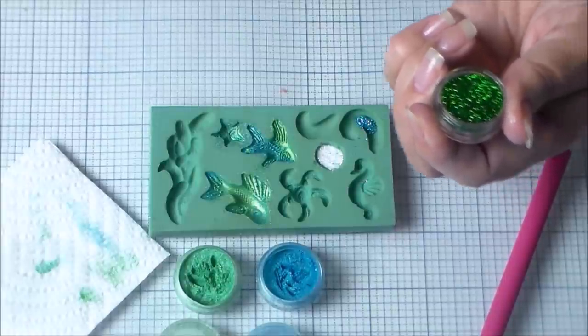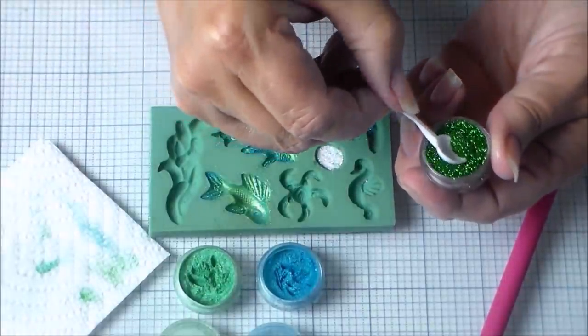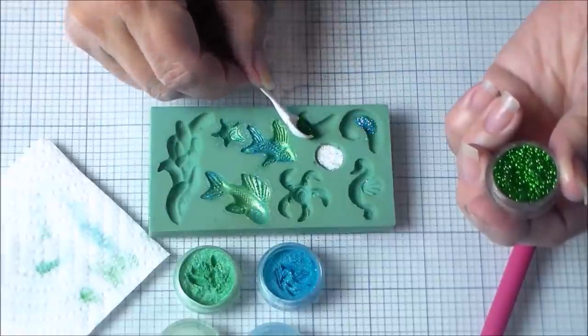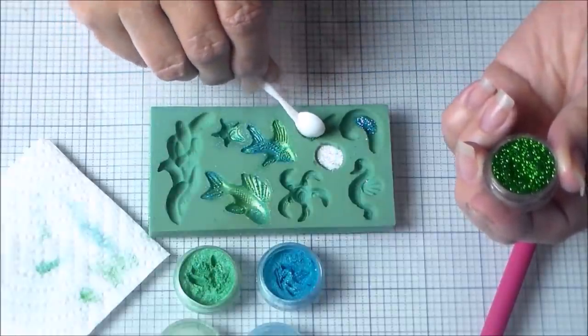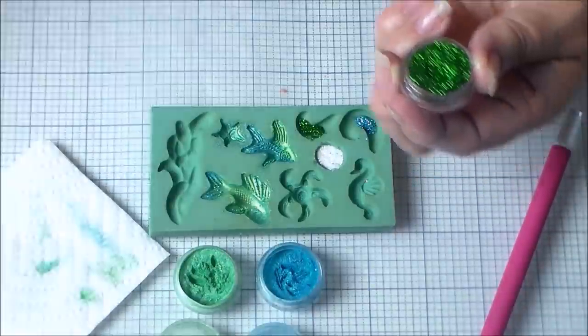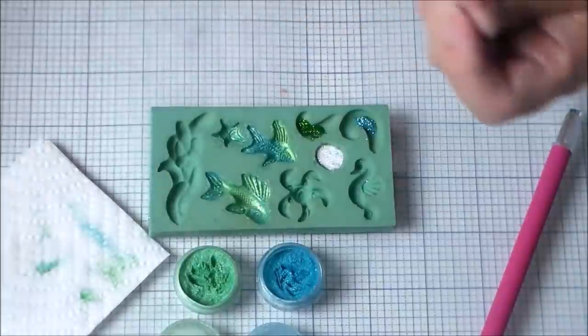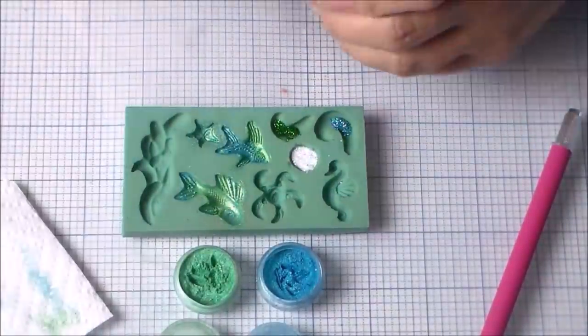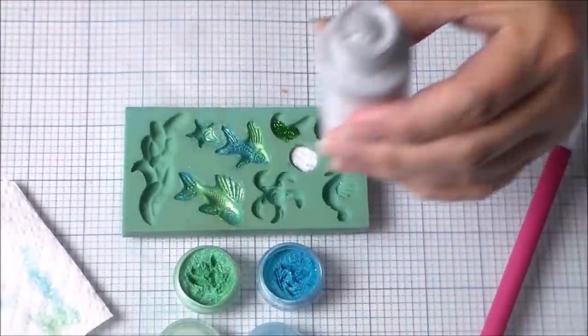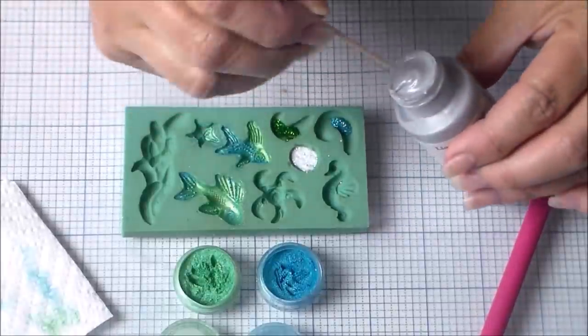This is the kelp from Christy Friesen and it comes with some of those other ocean colors, kind of like a little set. So I'm just going to drop in some to these molds and just kind of stir it around a little bit. You can't really use brushes with the glitter, it falls right off, so I just put it in like this.